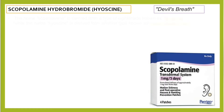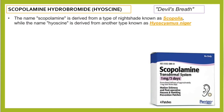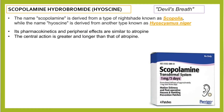The name scopolamine is derived from a type of nightshade known as Scopolia, and the name hyoscine is derived from another type of nightshade known as Hyoscyamus niger. Its pharmacokinetics and peripheral effects are similar to atropine.